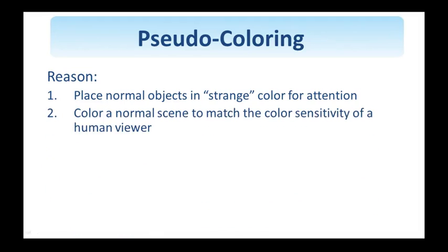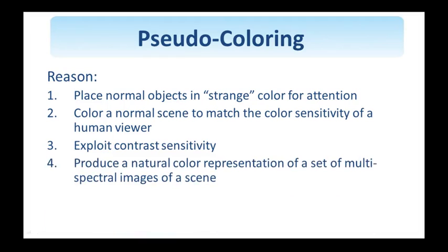We want to take advantage of the color sensitivity of the human viewer. The luminance response of rods and cones in the retina peaks in the green region of the visible spectrum, and we want to account for that. We also want to exploit the contrast sensitivity of the eye to changes in blue light, so we map normal colors of objects with fine details into shades of blue. And we want to produce natural color representations of multispectral images of a scene, including images obtained by sensors outside the visible wavelength range, such as infrared and ultraviolet.